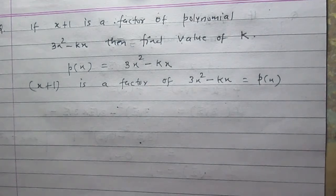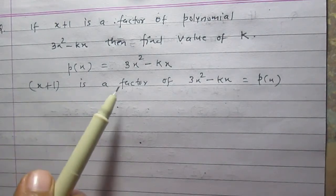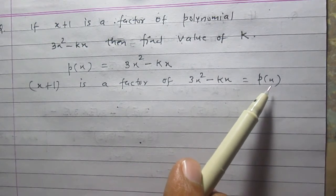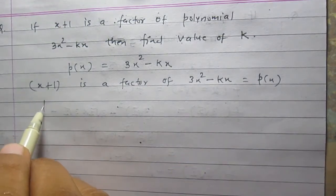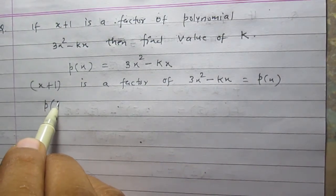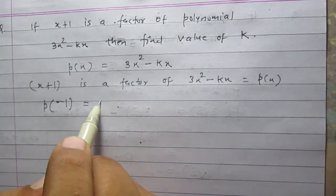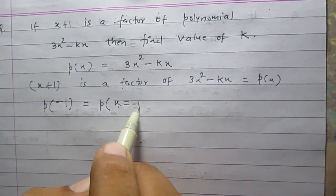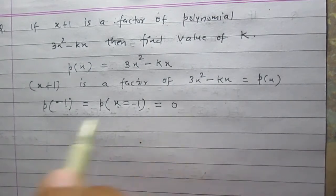If x+1 is a factor of p(x), then according to the factor theorem, p(-1), or the polynomial when x = -1, must equal 0.